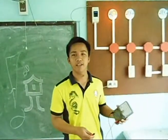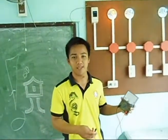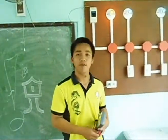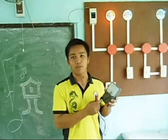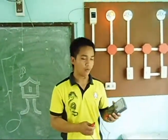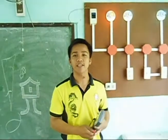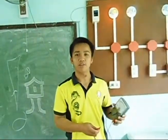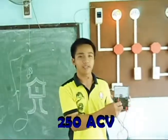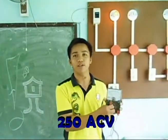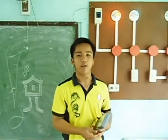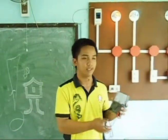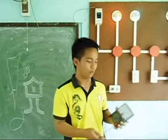Hi, good morning. I'm Marlon L. Lopez from PSI E4A. Now I will discuss to you how to check the convenience outlet. When you are testing the convenience outlet, you are going to turn it always to 50 AC or alternating current. Now I will show you how to test the convenience outlet. You will point it to 50 AC.